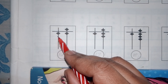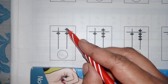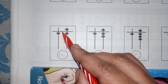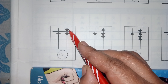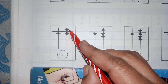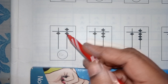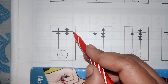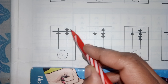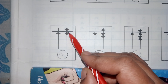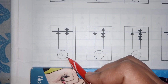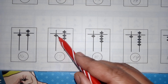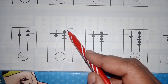This one: on the tens rod, 1 bit — write 1. On the units rod, one upper bit and one lower bit. The upper bit value is 5 and the lower bit value is 1, so 5 plus 1 = 6. Don't write 2 here — don't get confused. We must observe where the middle bar is and where the bit is placed. So the answer is 1-6 = 16.